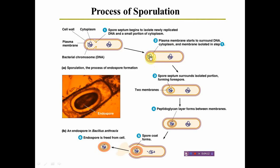The newly produced copy of DNA remains within the smaller cell. The larger cell then engulfs that smaller cell — the larger cell is called the sporangium and the smaller cell is the spore. The larger cell engulfs the spore, forming two layers surrounding it, within which a peptidoglycan layer called the spore cortex is produced. Under harsh conditions, the germ cells carrying the spore get destroyed, but the spores retain their potency.